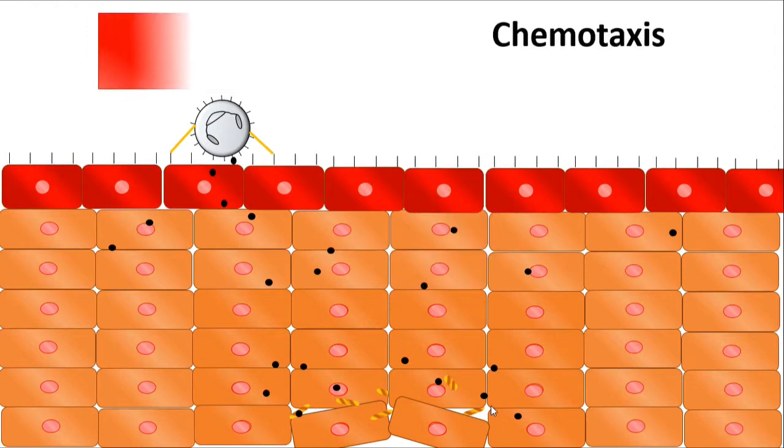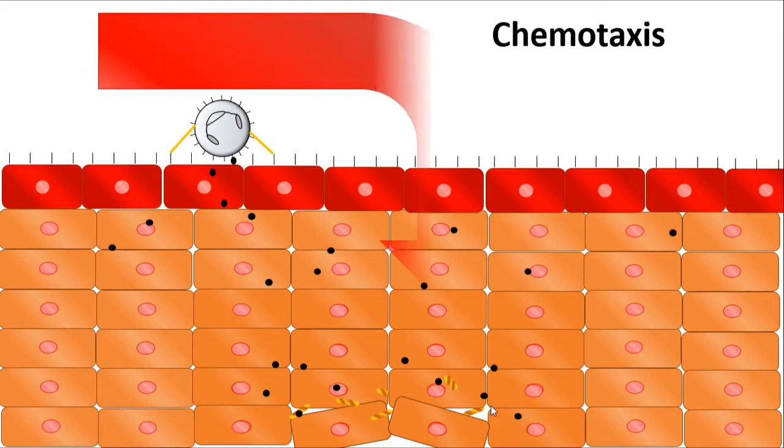Also, it is important to recognize that the cell is being drawn to this area due to the cytokines that are released from the infected area. The specific name for this process is chemotaxis, as the white blood cell is moving towards a chemical signal.